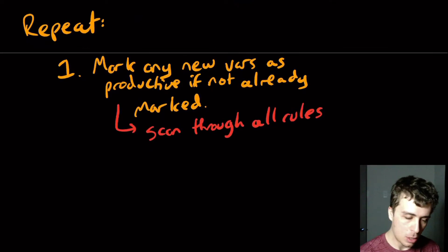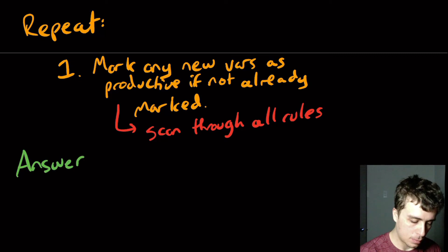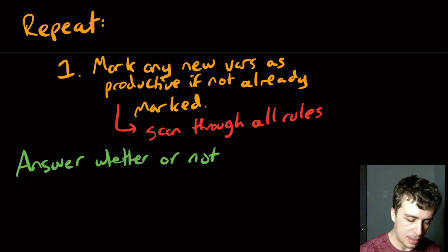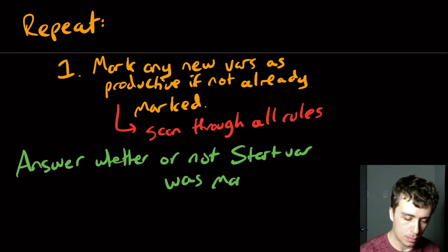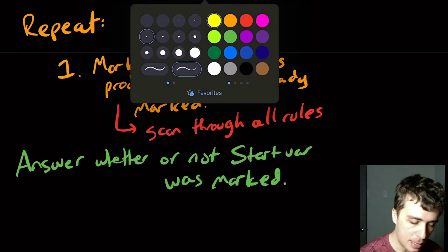And then after the first pass, I guess we will only have possible rules like this one, we're not going to have any of the first one again. And then we'll mark x as productive if we find this here. So then what we will do is we'll just repeat and then answer at the end whether or not the start variable, I'll call it start variable, was marked.